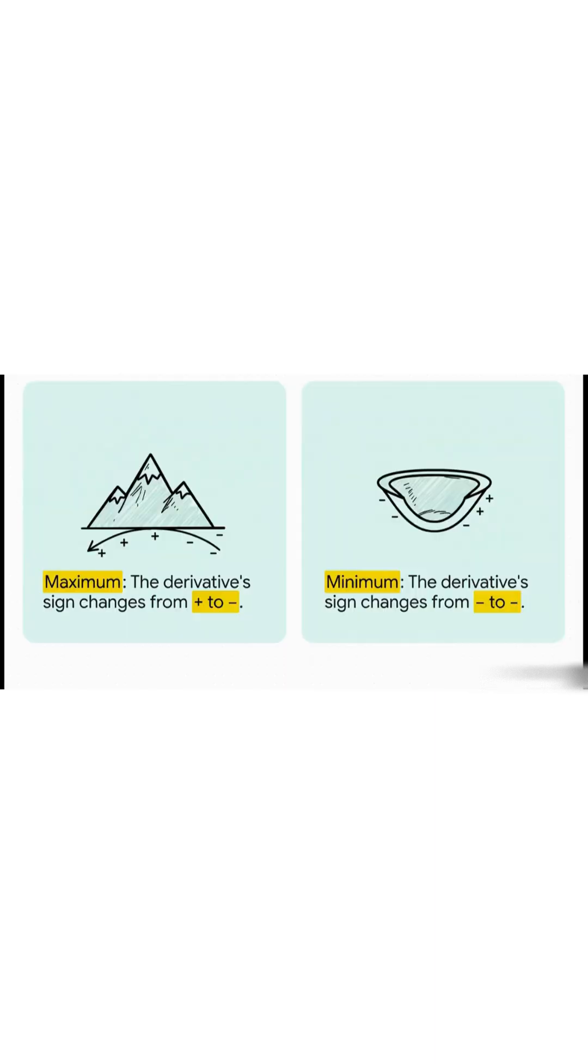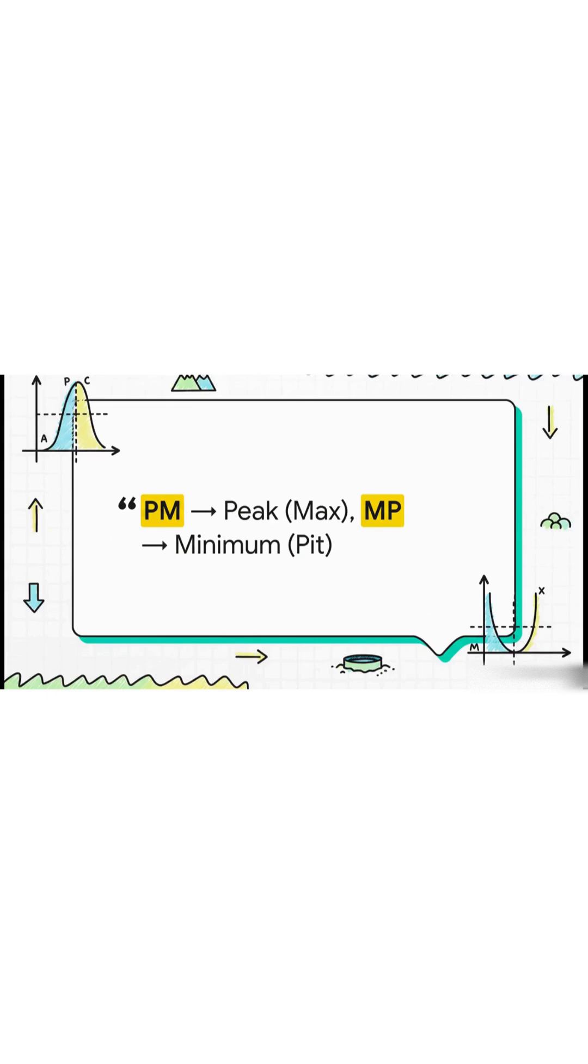And that leads right into this. Because what happens when that sign changes? Well, if the derivative goes from positive to negative, boom, you've just found a local maximum. And if it switches from negative to positive, that's your local minimum. Need a way to lock that in your brain? Here you go. Think PM, like the afternoon? That's a peak maximum. And MP? Think of it as a minimum pit. You'll literally never get them mixed up again.